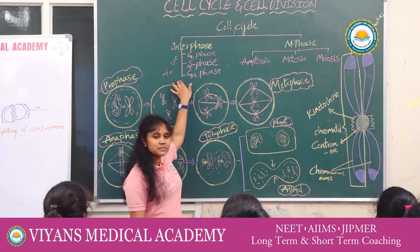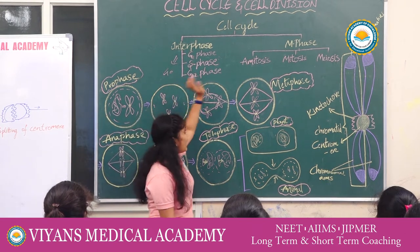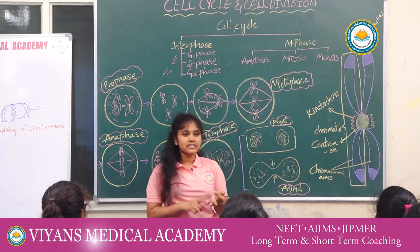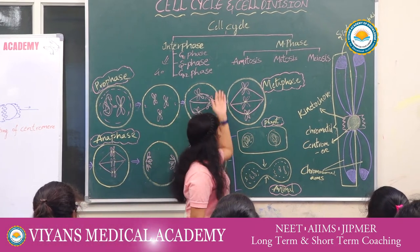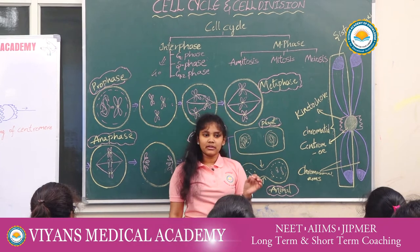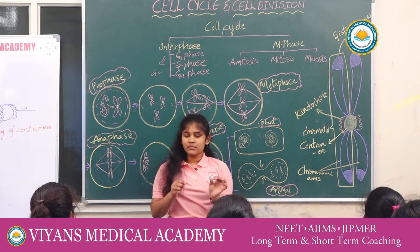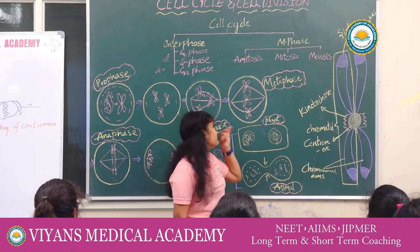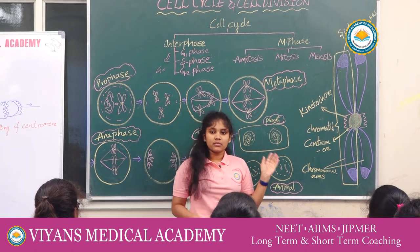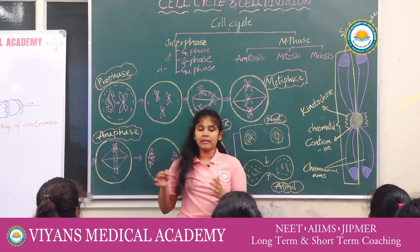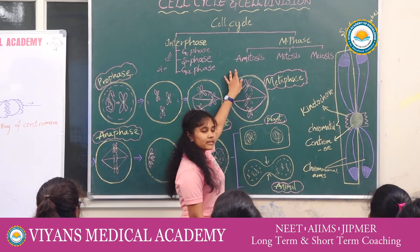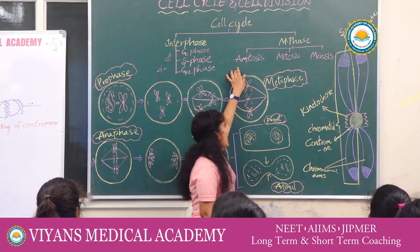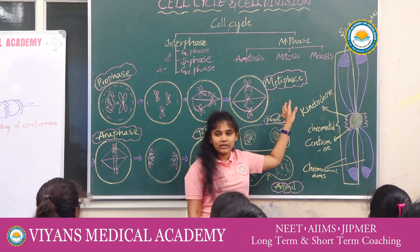Interphase consumes most of the time — 95% — and M phase consumes 5%. M phase is of three types: amitosis, mitosis, and meiosis. Amitosis is a primitive type which occurs very rarely and can be found only in some bacteria. Amitosis occurs without the formation of any spindle fiber apparatus. Mitosis and meiosis are found frequently.